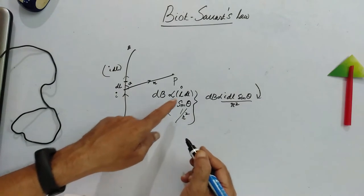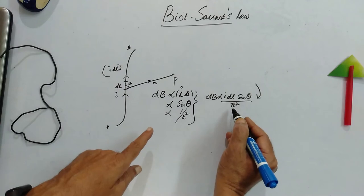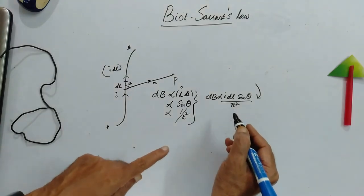That means if I is increased, then magnetic field is increased. If R is increased, the magnetic field is reduced.